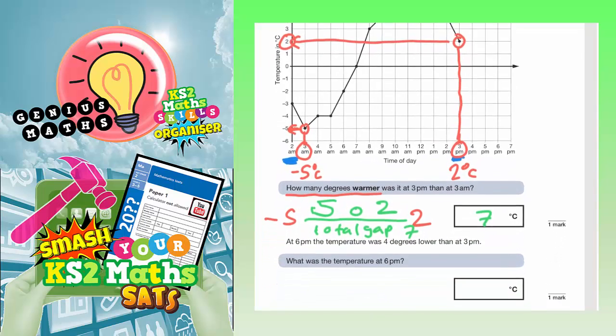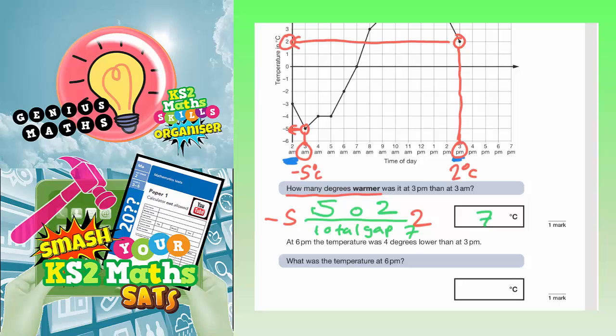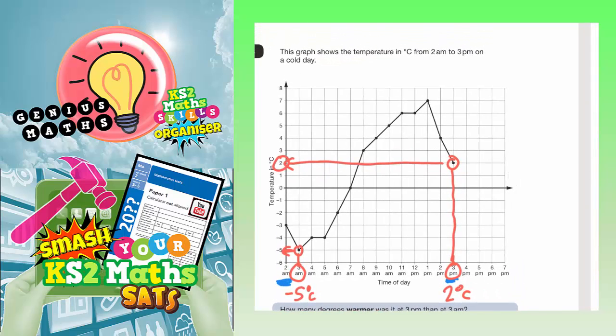Scrolling down, we can see the next part of the question. At 6pm the temperature was 4 degrees lower than at 3pm. So 4 degrees lower than at 3pm, and that is 6pm. So let's go back. So 6pm, that was 4 degrees C lower than 3pm. Just write the question there, so we don't have to scroll down again.